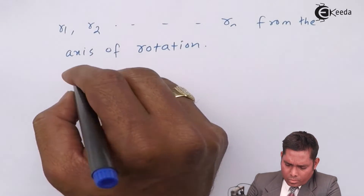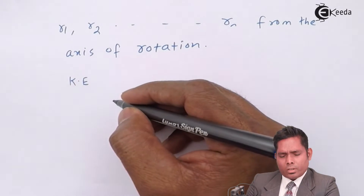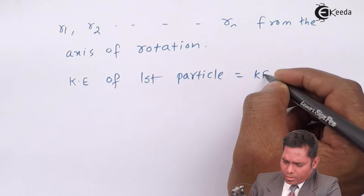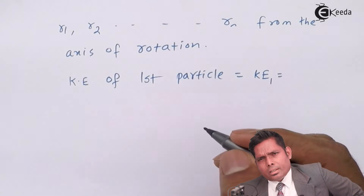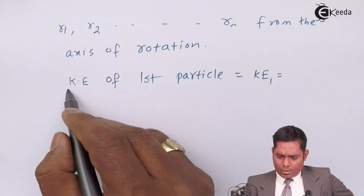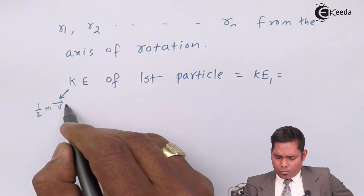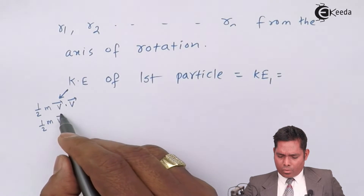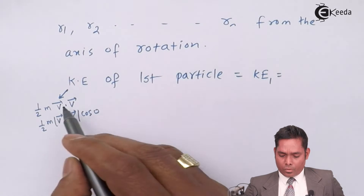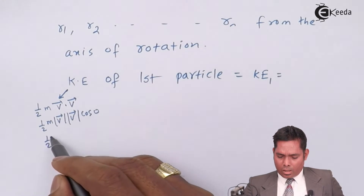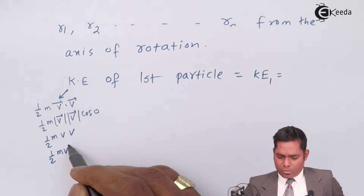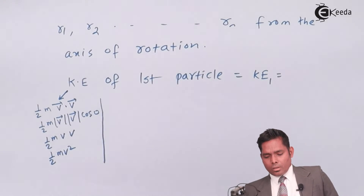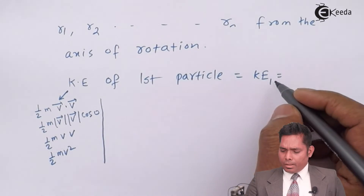The kinetic energy of the first particle is given by KE₁. Kinetic energy is a scalar quantity. The formula is half m dot product of velocities. Since the dot product of v with itself gives v², with cos(0°) = 1, this comes out to be ½mv².